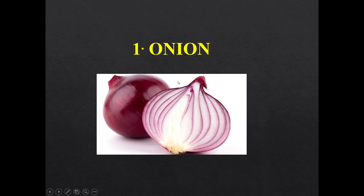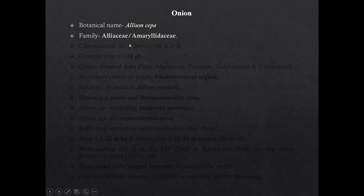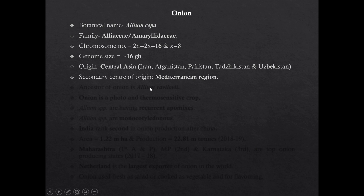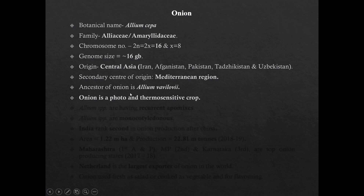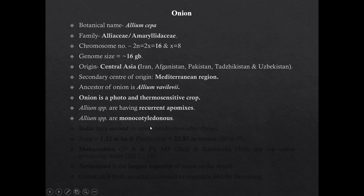First we are going to discuss onion. The botanical name of onion is Allium cepa and it belongs to family Alliaceae or Ammelidaceae. Chromosome number is 16. Genome size of onion is nearly 16 GB. Origin of onion is Central Asia and the secondary center of origin is the Mediterranean region. Ancestor of onion is Allium vavilovii. Onion is a photo and thermo-sensitive crop. Allium species are having recurrent hypo-mixis.